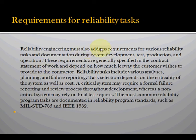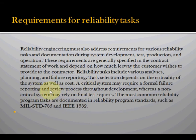Reliability engineering must also address requirements for various reliability tasks. These requirements are generally specified in the contract. Reliability tasks include analysis, planning, failure reporting, and task selection. Critical systems may require formal failure reporting. The most common reliability program tasks are documented in MIL-HDBK-785 and IEEE 1332.